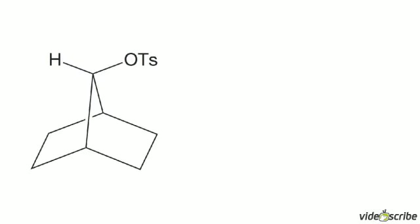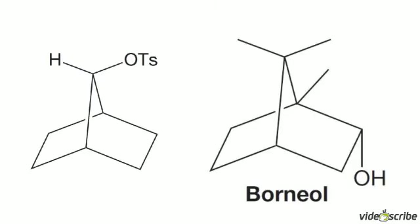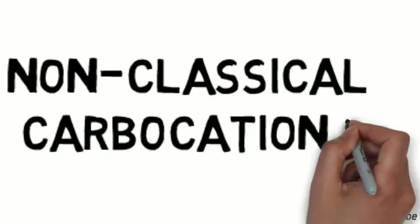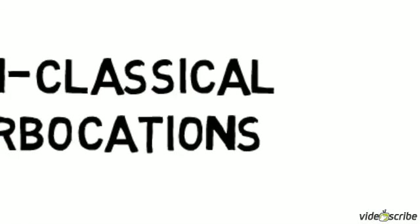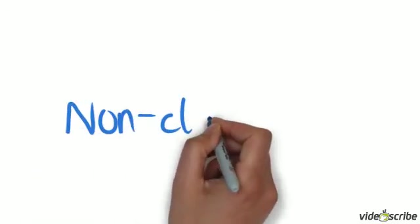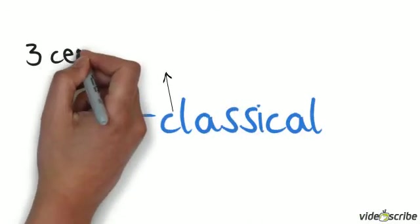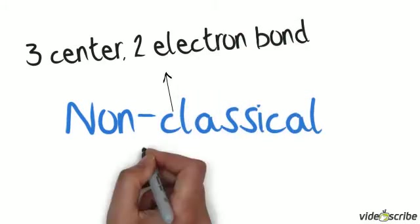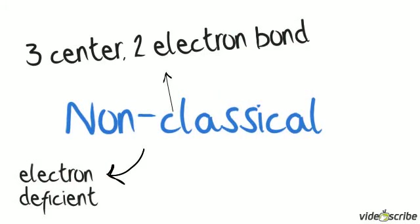I also investigated rate ratios of norbornyl derivatives, which led me to doubt the validity of proposed carbocation species following non-classical structures. Non-classical carbocations are proposed to have three center two-electron bonds. They are electron-deficient chemical bonds where three atoms share only two electrons.